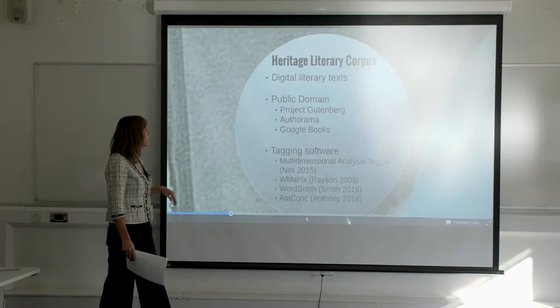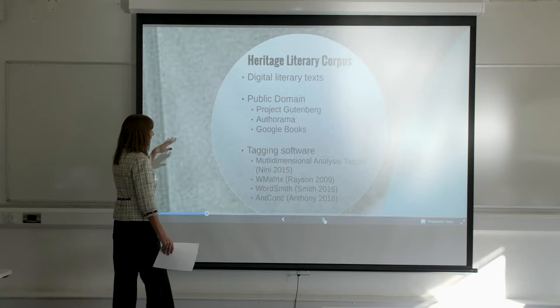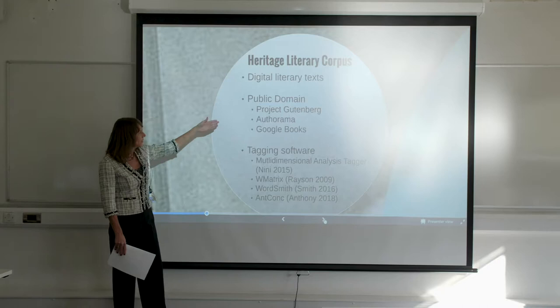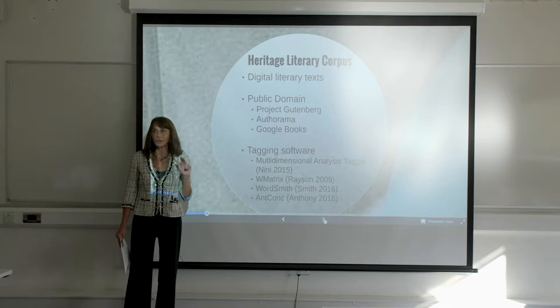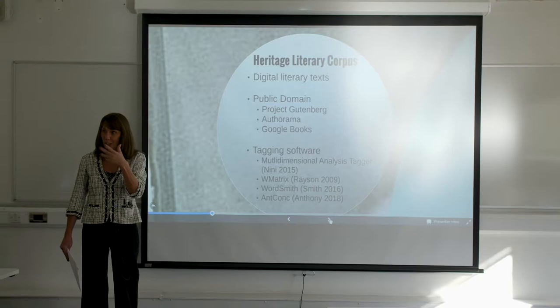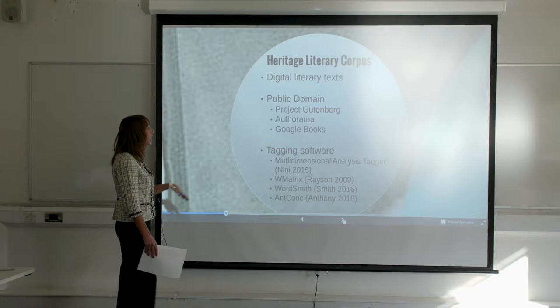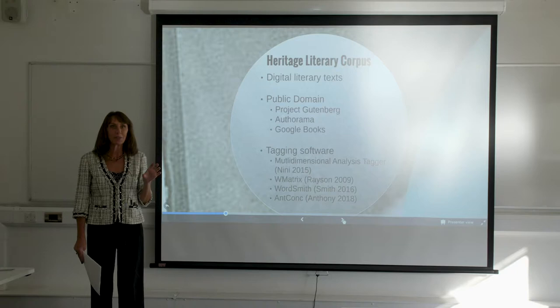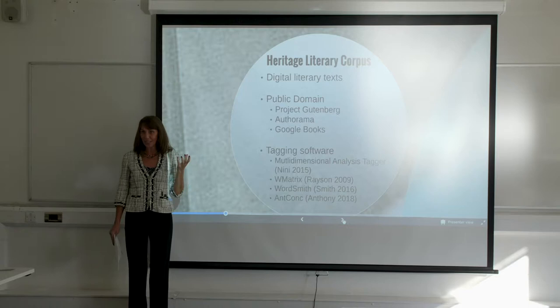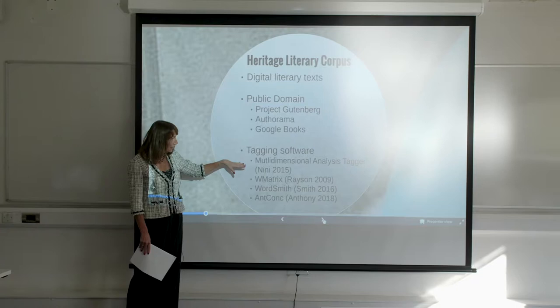To create a literary corpus, you obviously need digital literary text. There is an abundant publicly available means of getting novels out there. Project Gutenberg is probably the most popular. One thing to keep in mind when getting novels from this website is that there's one in America, one in England, and one in Australia, and the copyright laws differ between countries. So you need to make sure that you got it from the country that you're in and doing your research. There are other public domain websites as well. Once you have your text, you can tag it — I'll show you a video of what the tags actually look like — by running the digital text through linguistic software.